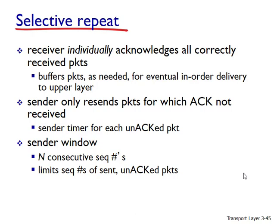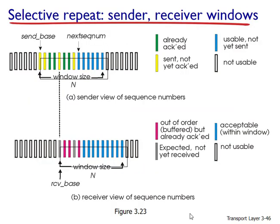As the name suggests, selective repeat protocols avoid unnecessary retransmissions by having the sender retransmit only those packets that it suspects were received in error at the receiver. This individual, as-needed retransmission requires that the receiver individually acknowledge correctly received packets. A window size of N will again be used to limit the number of outstanding unacknowledged packets in the pipeline. However, unlike Go Back N, the sender will already have received acknowledgments for some packets in the window. Figure 3.23 shows the sender's view of the sequence number space.